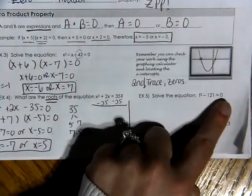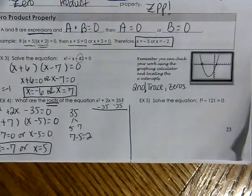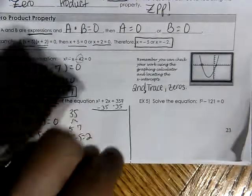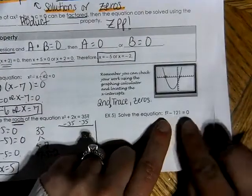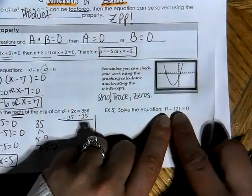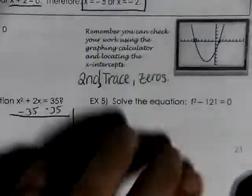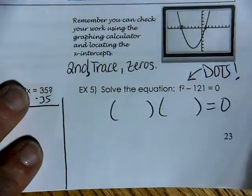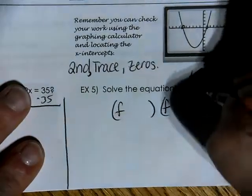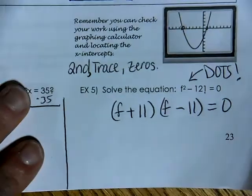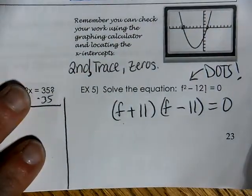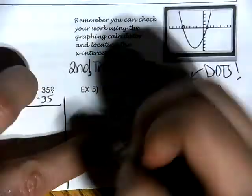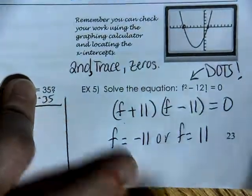Example number 5: f squared minus 121 equals 0. This one has two terms. Whenever you see two terms, ask yourself: is it a difference of two squares? In this case, it is — 121 is a perfect square. So I recognize this as a DOTS. I factor into two parentheses: the square root of f squared is f and f, and the square root of 121 is 11. Only a positive times a negative gives negative 121. Therefore f equals negative 11 or f equals positive 11, which you can also write as plus or minus 11.